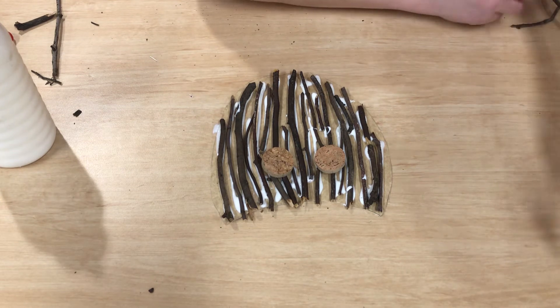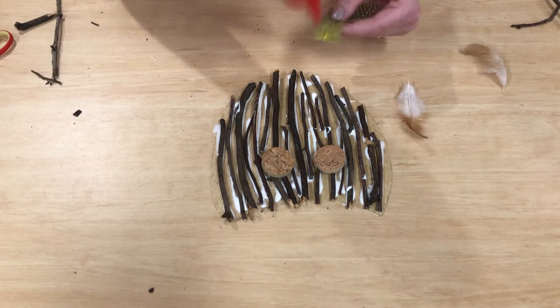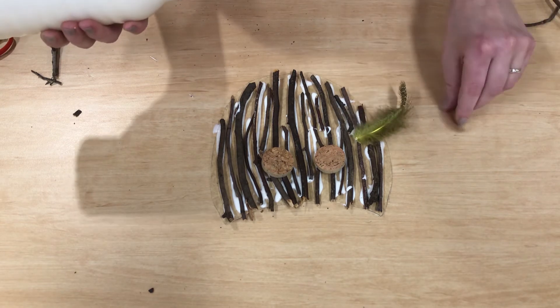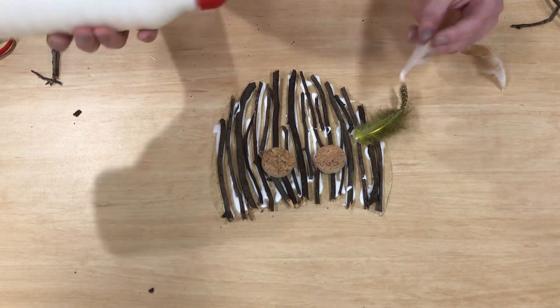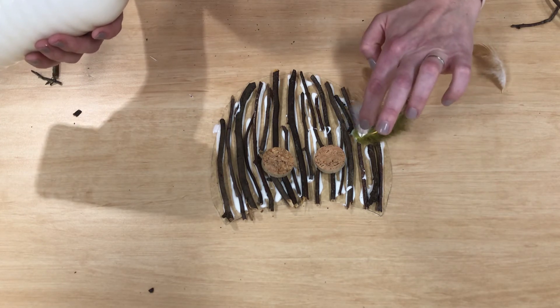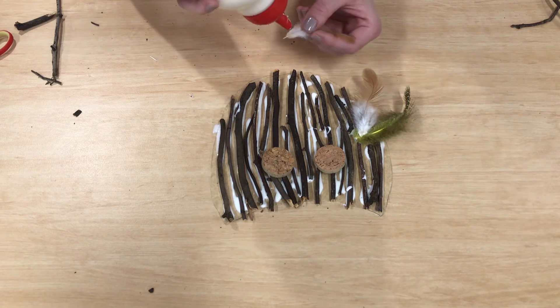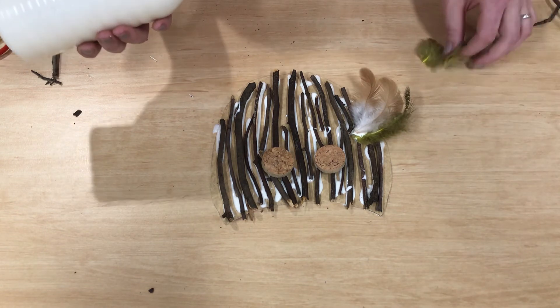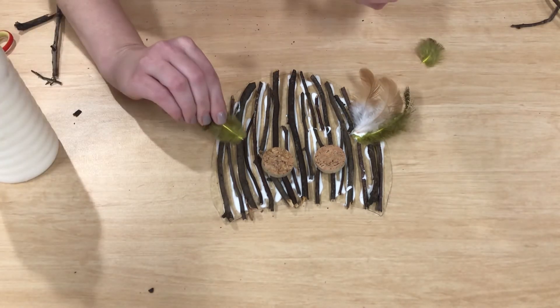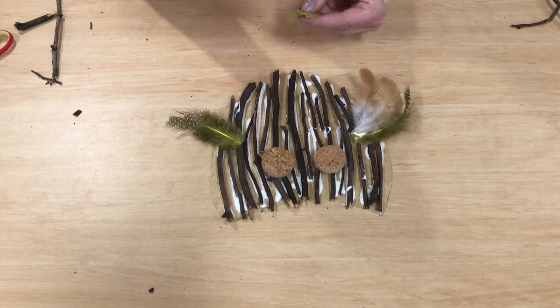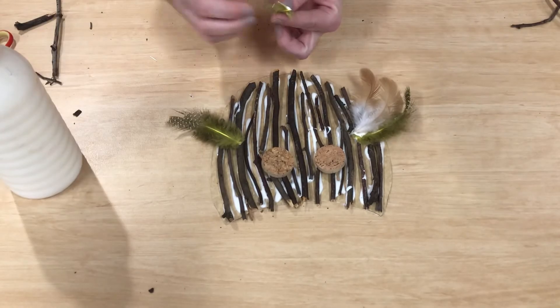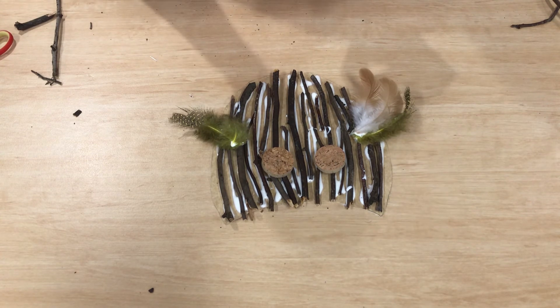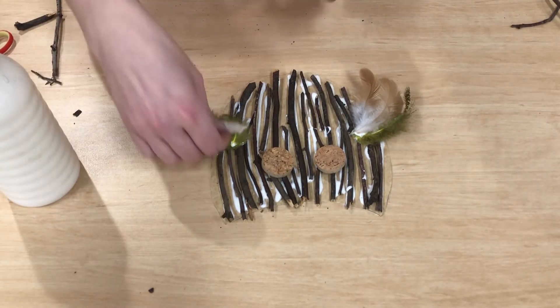And we're also going to give our owl some feathers for his wings. We're just going to put some dabs of glue on these little feathers there. Now if you don't have feathers or anything to use for wings for your owl, have a look around your backyard. See if you've got some leaves that you could use instead. There's lots of leaves falling off the trees in Dubbo at the moment.